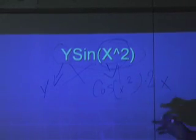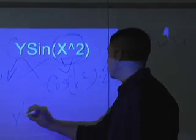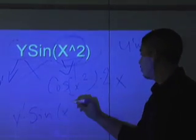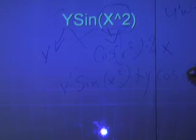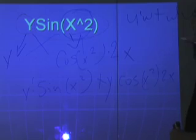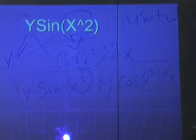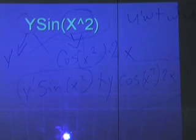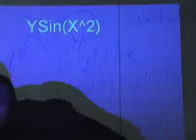Now that we've found the chain rule for the second term, we apply the product rule. Using the formula — derivative of first times second plus first times derivative of second — we get y prime times sine of x squared, plus y times cosine of x squared times 2x. That's our result for the first part. We'll set it aside: y prime sine of x squared plus y cosine of x squared times 2x.